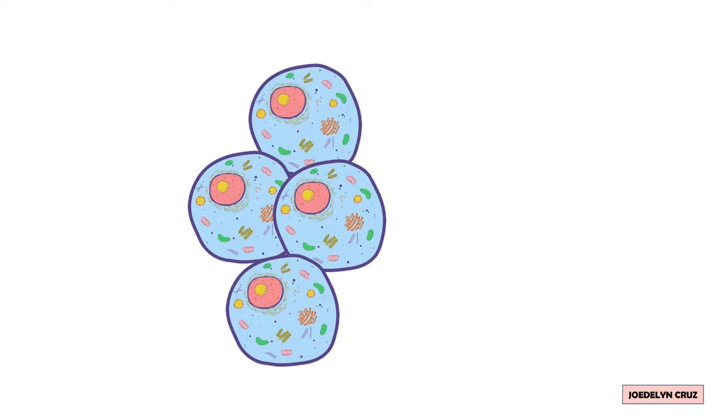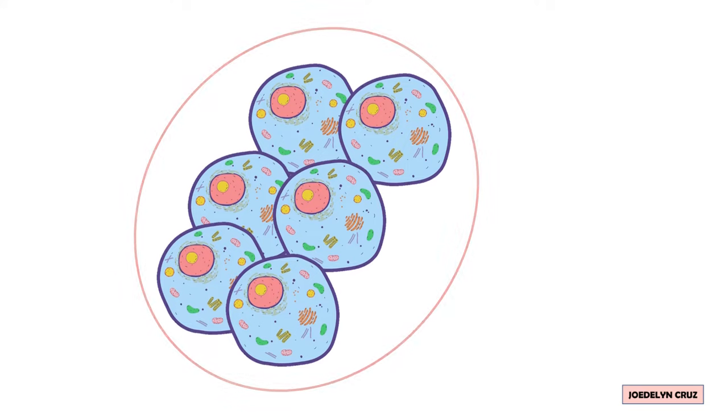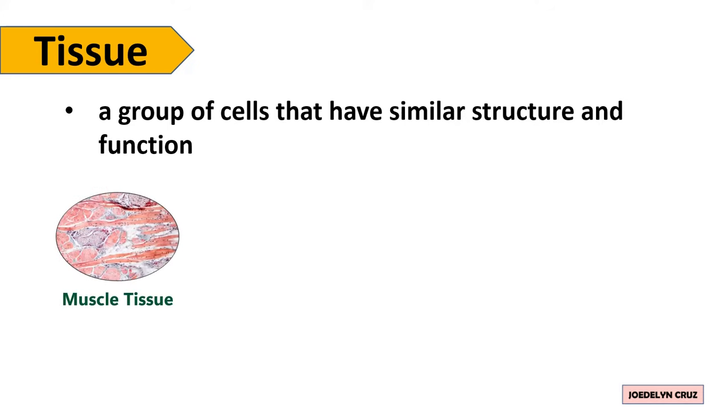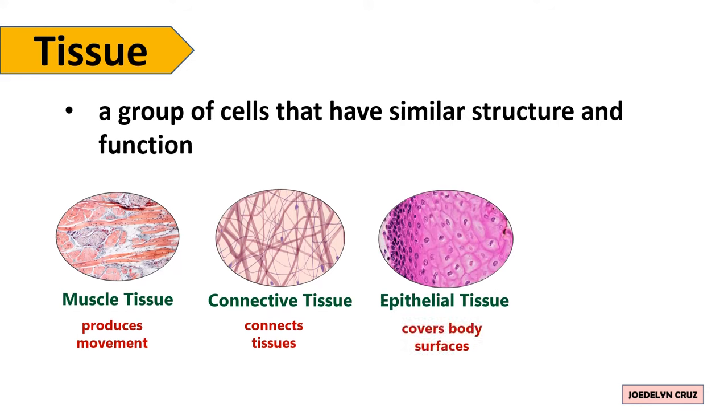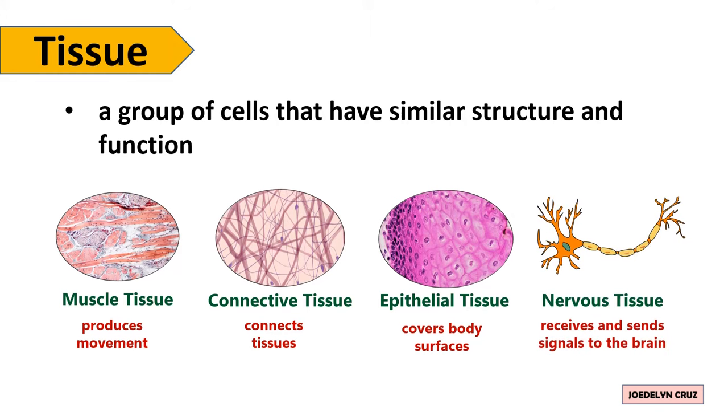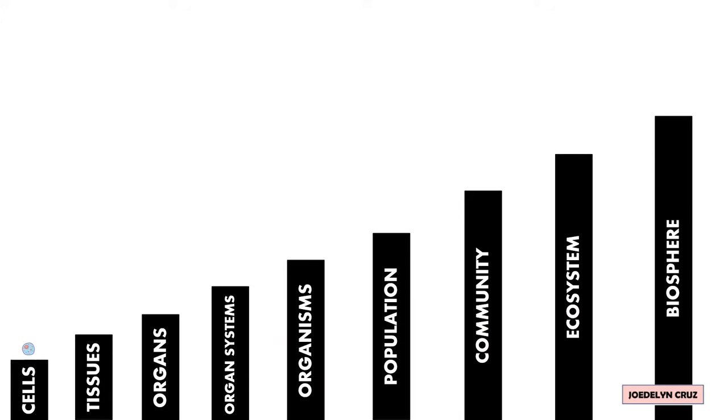When a group of similar cells join together, they form tissue. Tissue is a group of cells that have similar structure and function. The second smallest level of organization is Tissue.